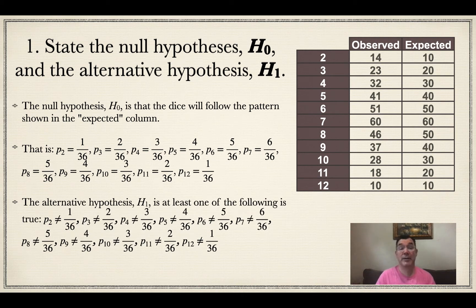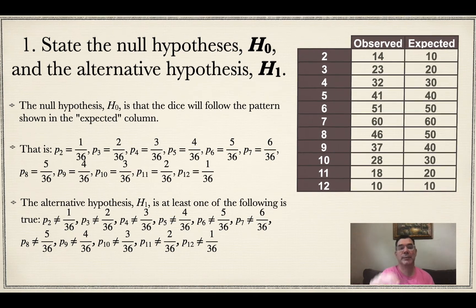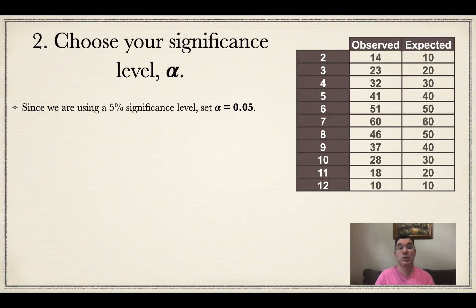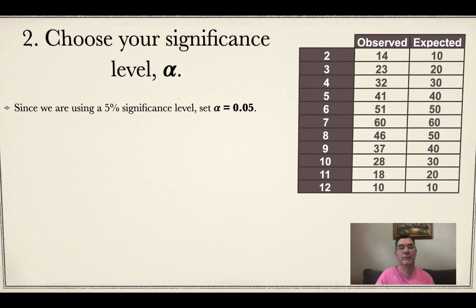My alternative hypothesis is that at least one of these probabilities is not what it should be. So the probability of rolling a 2 with these dice is not 1 out of 36, or it's not even close enough to that. Or the probability of rolling a 3 is not close to being 2 out of 36, and so on. At least one of those would have to not be true in order for me to accept my alternative hypothesis. So my significance level, as always, is 5%, and that means that alpha is 0.05.